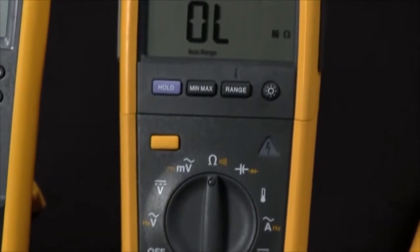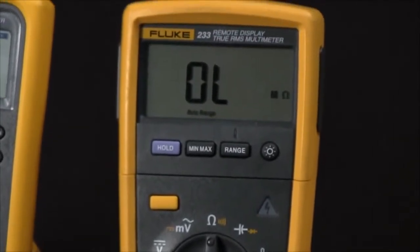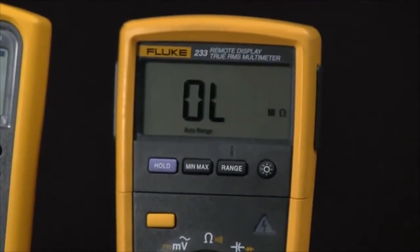In this case we have an open indication which says the fuse is bad in this multimeter. If we go over to the Fluke 87,